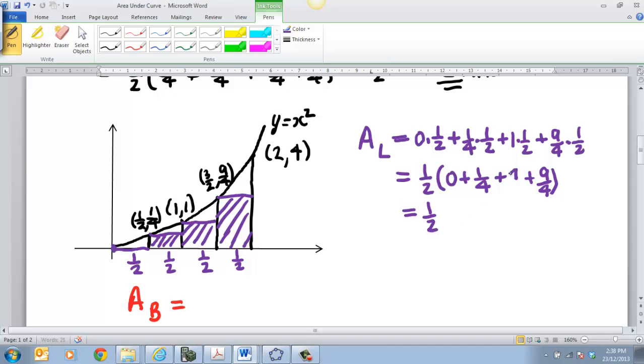and then go zero plus a quarter plus one plus nine on four. Keeping in mind, because it's a lower estimate, we're using the left-hand point. So if I work that out, that's going to be a half. Adding these, if I make that four on four, which is what one is, that becomes equal to 14 on four, which becomes equal to 14 on eight. So that becomes equal to seven on four, which is equal to one and three quarters, or 1.75. So that's my lower bound.